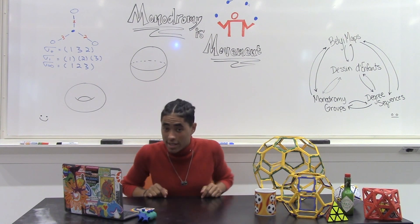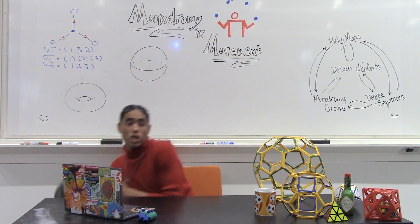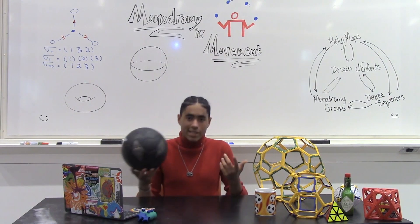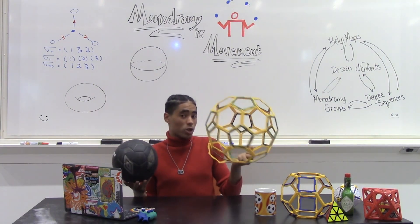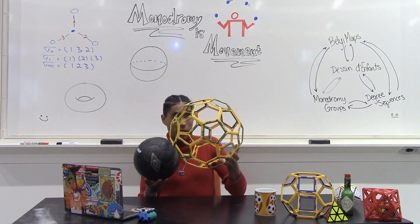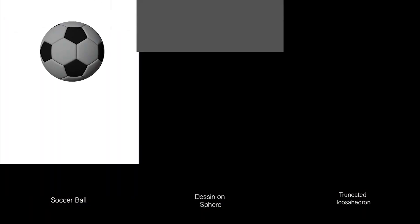Now that we know what a Dessin is, we're going to bring this full sphere. Do you remember the soccer ball from the beginning? It's actually a Dessin too. It's technically the truncated icosahedron on the sphere. Here's a visualization of this now.